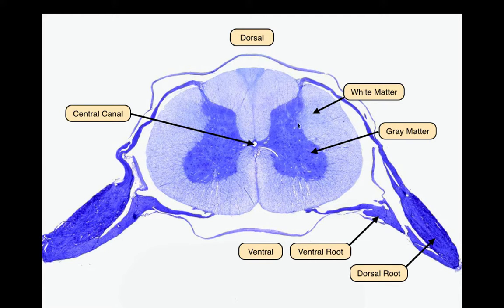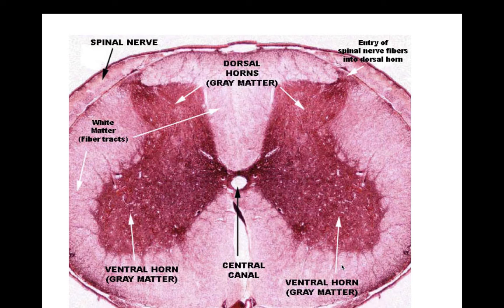So this is going to be your posterior horn, lateral horn, and anterior horn. If you have the dorsal root right here, you know this is the dorsal side of the spinal cord, so this is going to be the posterior horn and the ventral horn. Here again we have the ventral horn, the dorsal horn, and here is the anterior median fissure.